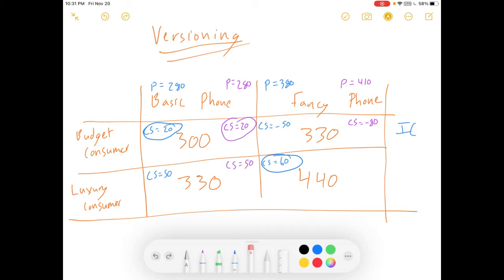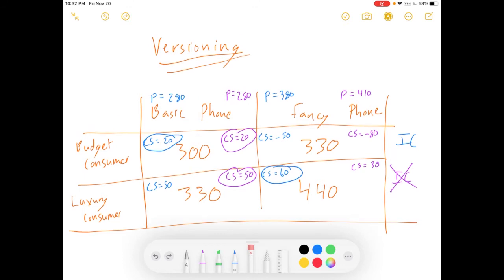What about our luxury consumer, though? This consumer surplus didn't change. It's still $50. But the other one went down to $30. There's only a $30 difference between willingness to pay and price. So, the luxury consumer just got priced so that they'd rather just buy the basic phone. Is this scheme incentive compatible? No. Because it does not lead to the sorting that we want.